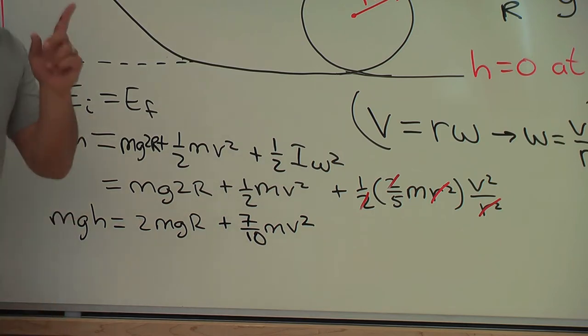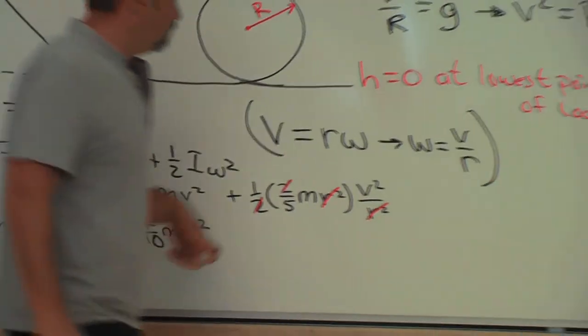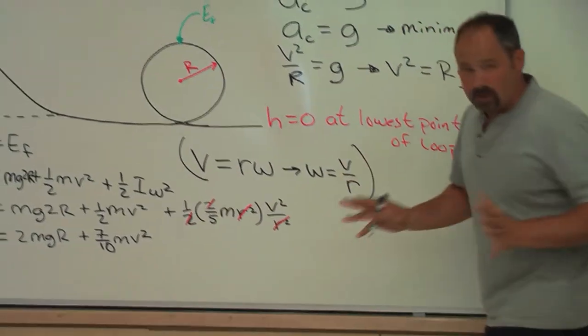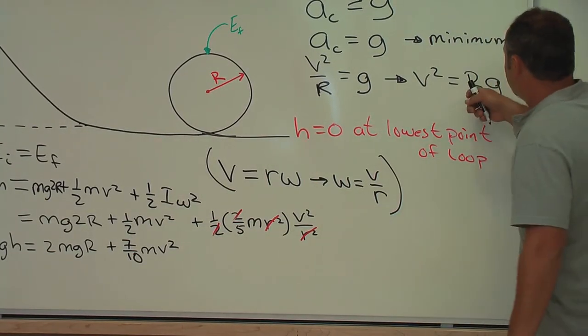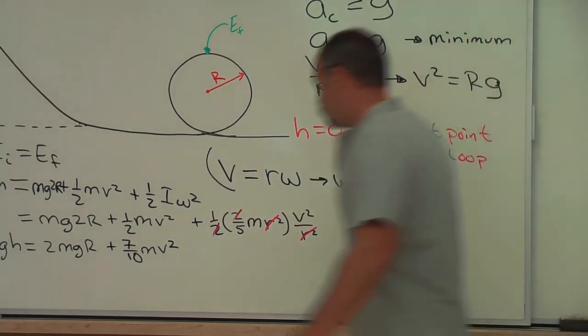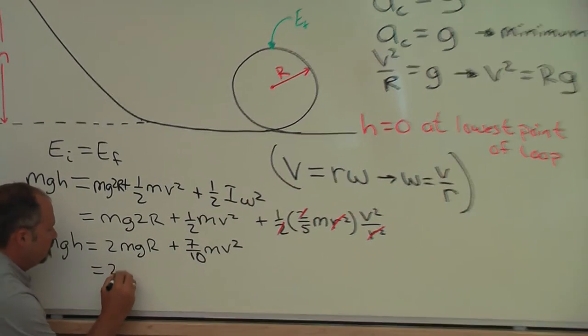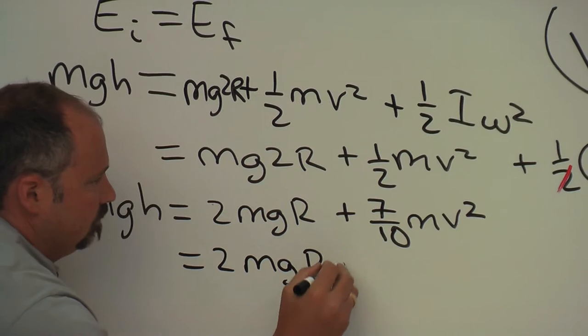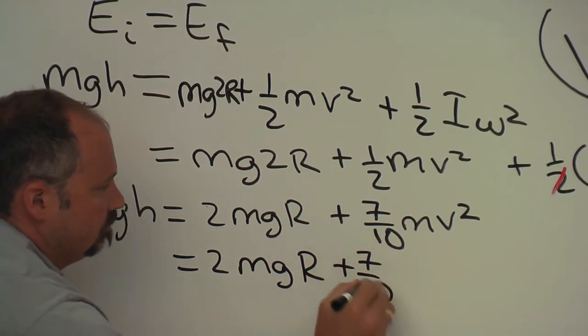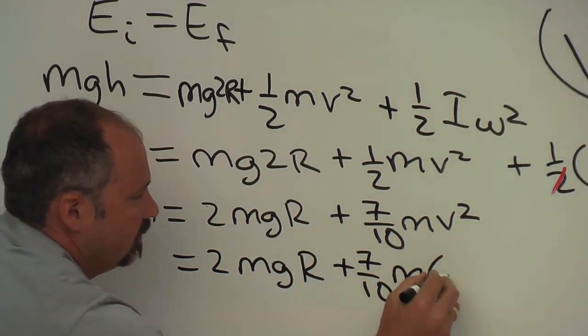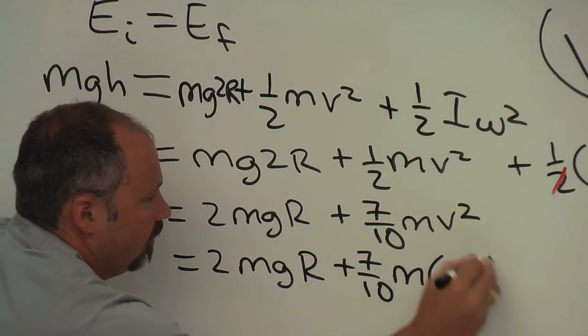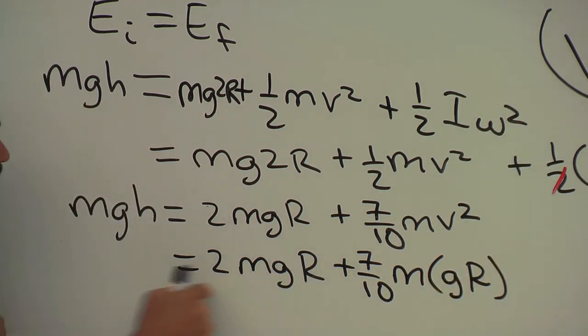So, now we can plug in for v², because we know v², in order for it to just barely make the loop, has to equal radius of the loop times the acceleration of gravity. So, plugging that in here, we get gR there.